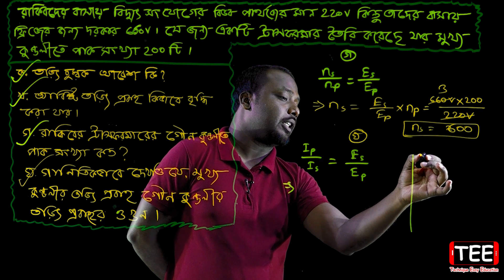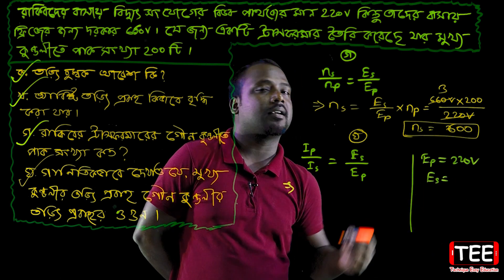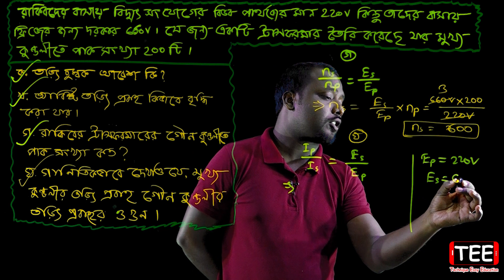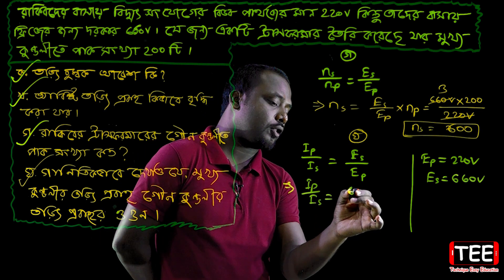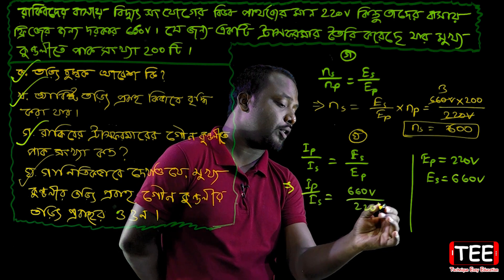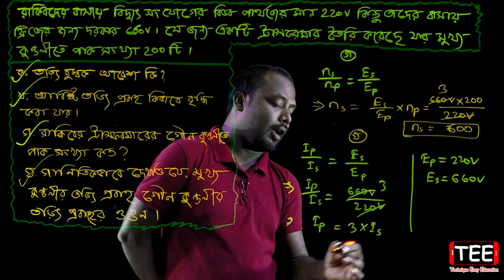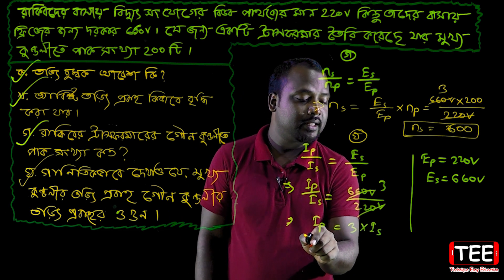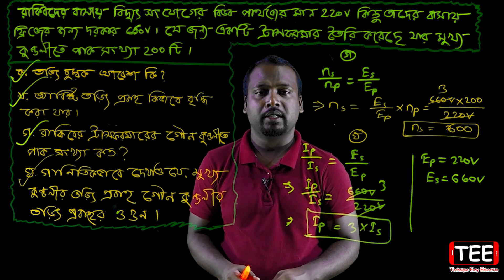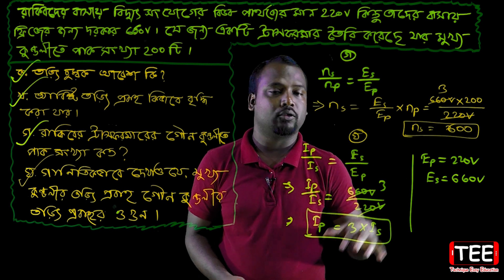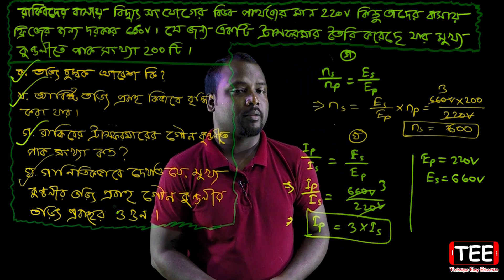ES is equal to EP, so EP is equal to 10 or 220 volts. And ESR is equal to 360 volts, so IP by ES, ESR is equal to 360 volts and ESR is equal to 220 volts. So this is equal to 3, IP is equal to 3 volts. We have a question — if CH2 is equal to 3 volts, we have seen that we also have 100 volts.